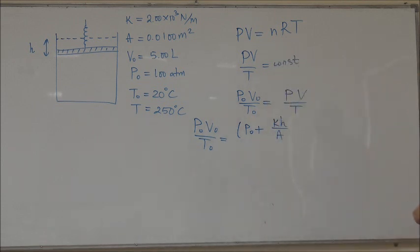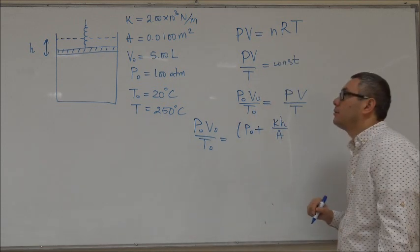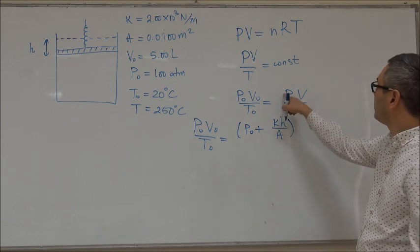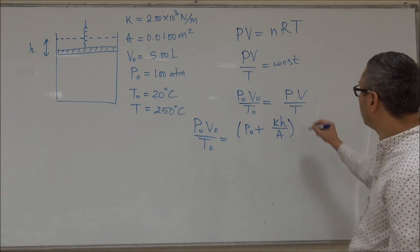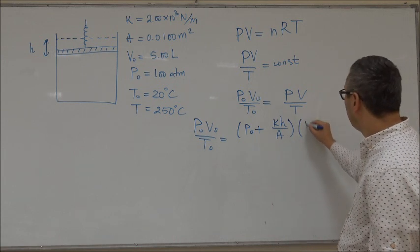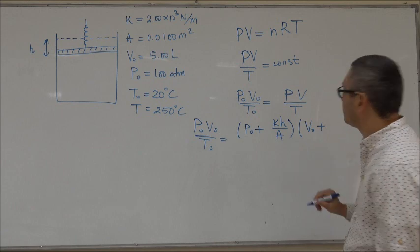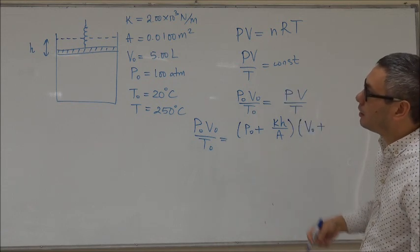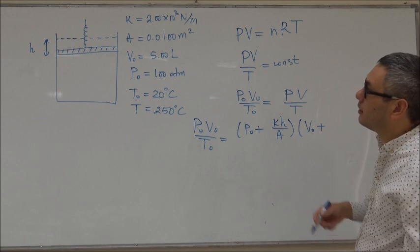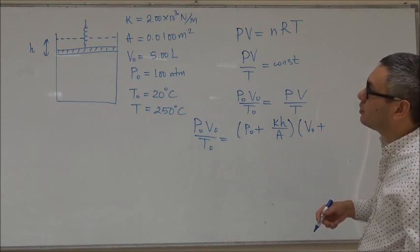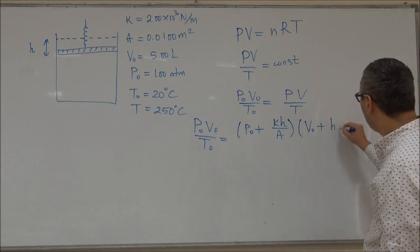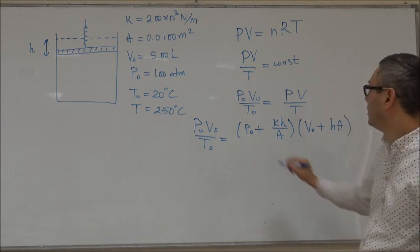What about the new volume? Well, that's going to be the original volume plus that increase in volume due to the increase in the piston position. That increase in volume equals H times A. With the new temperature T, we can rewrite this equation.